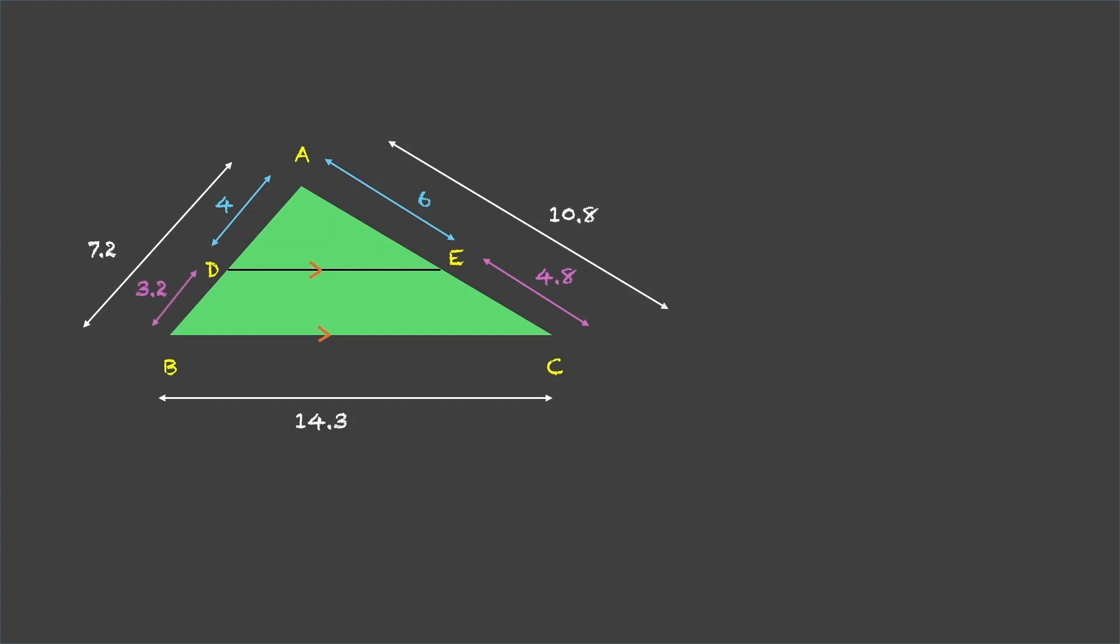Let us again take out the ratios. AD upon DB is 4 by 3.2 which is 40 by 32. That means 5 by 4. And AE upon EC is 6 by 4.8 which is 5 by 4. Once again, AD upon DB is equal to AE upon EC.